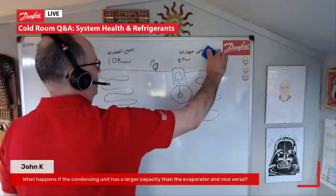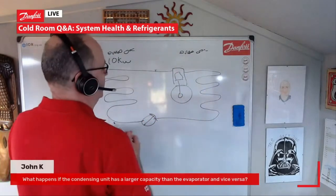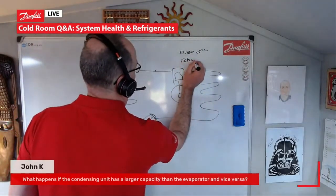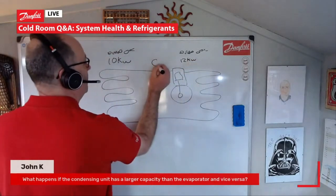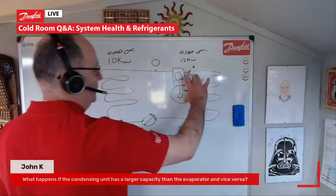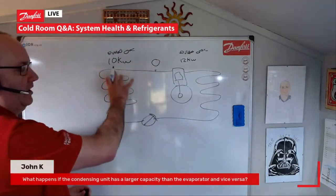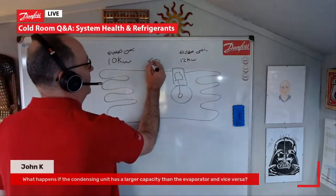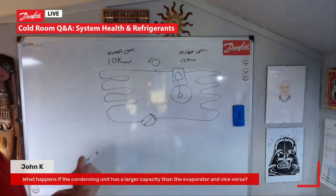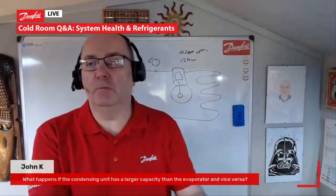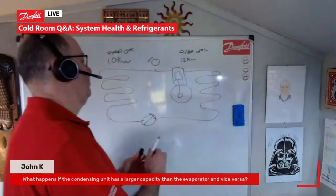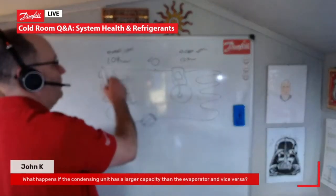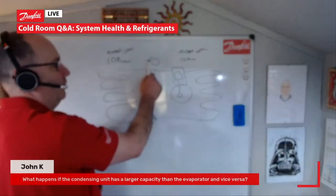If we then change things around and say we've got a 12 kilowatt compressor, that now can do more duty than our evaporator can actually provide. So our suction pressure is going to fall a little bit. You can work this out on balance graphs and balance tables — most of it's done nowadays on selection software for the evaporators. But in essence, if you've got a larger compressor than the evaporator, your suction pressure will fall a little bit.